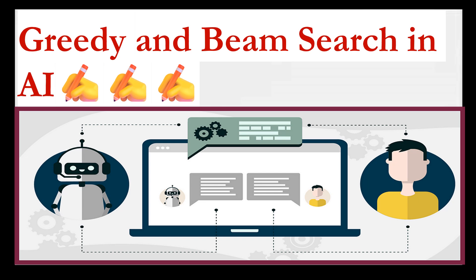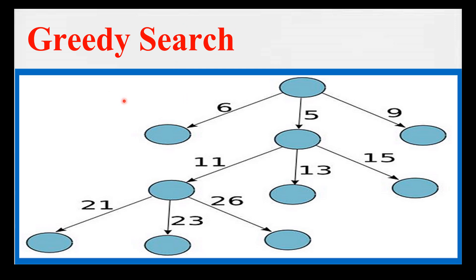Artificial intelligence has revolutionized the way we work, live, and interact with technology. Two powerful search algorithms — greedy search and beam search — have played a significant role in shaping the AI landscape. In natural language processing, greedy search is a method used to find the most likely sequence of words or phrases in a given context, and it works by making a locally optimal choice at each step.